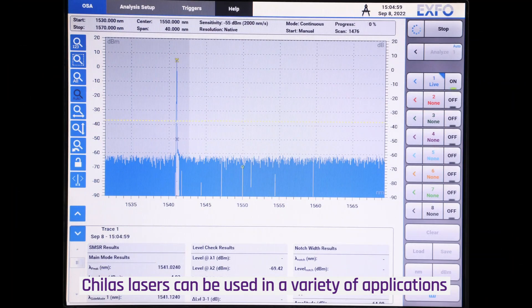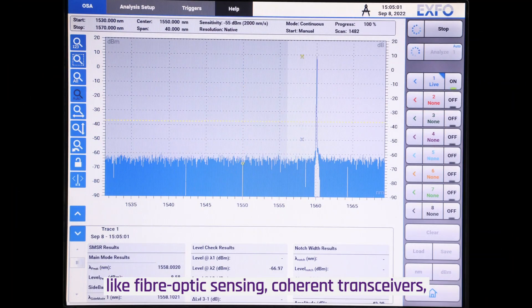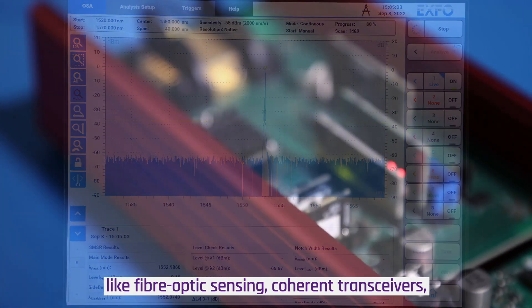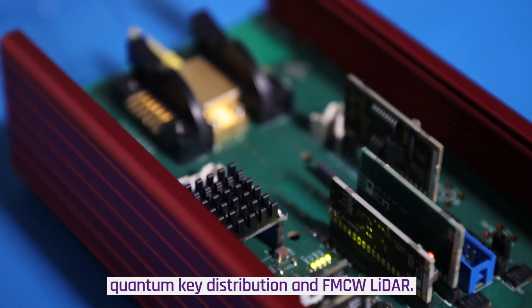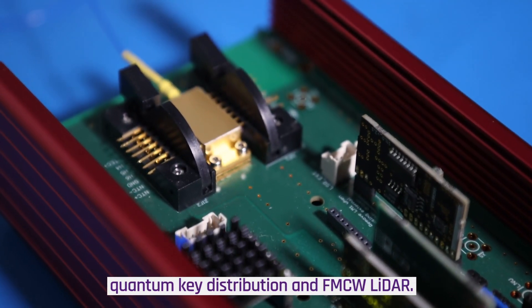Chilas lasers can be used in a variety of applications like fiber optic sensing, coherent transceivers, quantum key distribution, and FMCW lidar.